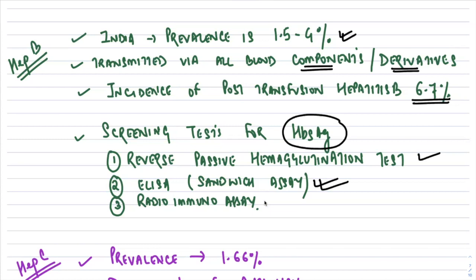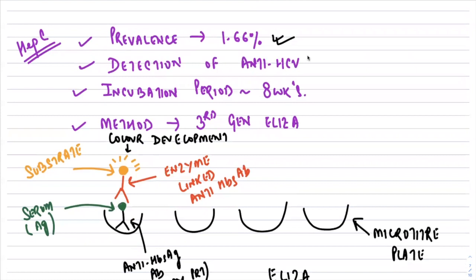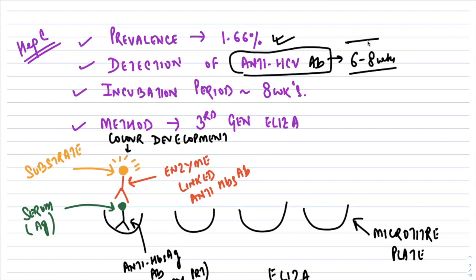For hepatitis C, prevalence in India is around 1.66%. We detect anti-HCV antibody. Antibody development takes approximately six to eight weeks and the incubation period is around eight weeks, so a person who has recently contracted HCV may have no detectable antibody yet and can still transmit the virus. The method of detection used now is the third-generation ELISA.